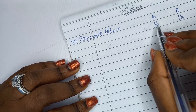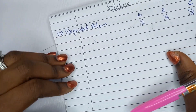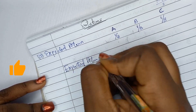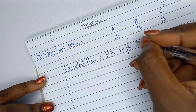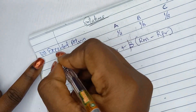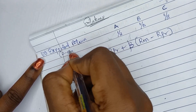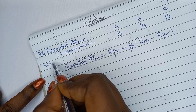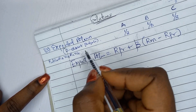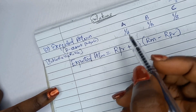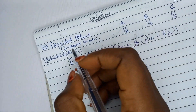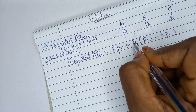The formula for expected return uses: risk-free rate plus beta times (market return minus risk-free rate). Since this is a multi-asset portfolio, you first need the portfolio beta. The expected return of a two-asset (or multi-asset) portfolio is: return of A times weight of A, plus return of B times weight of B, plus return of C times weight of C.